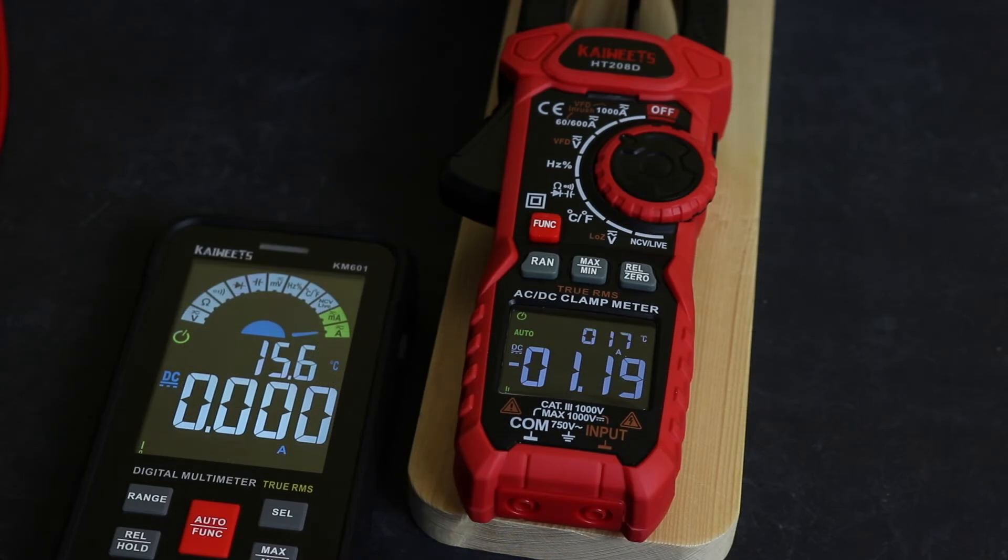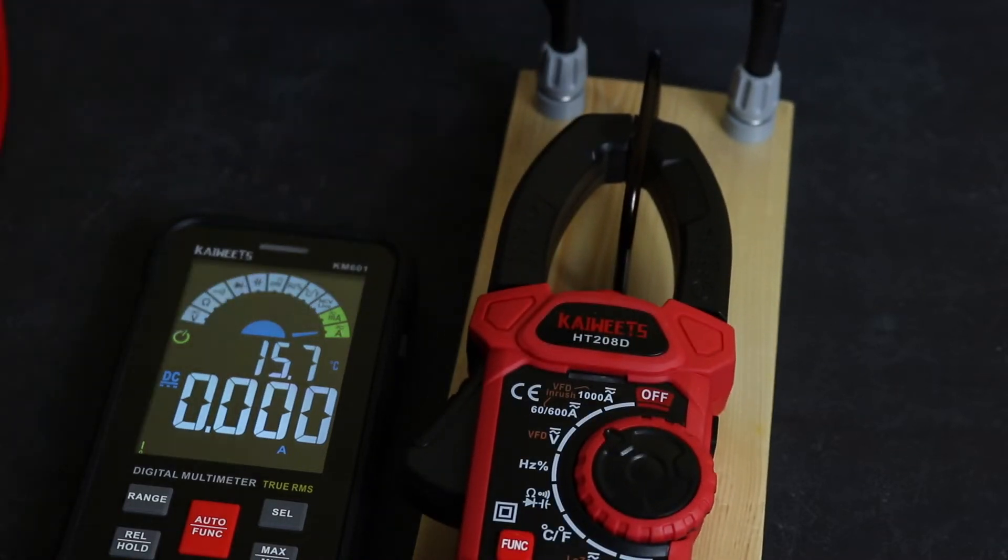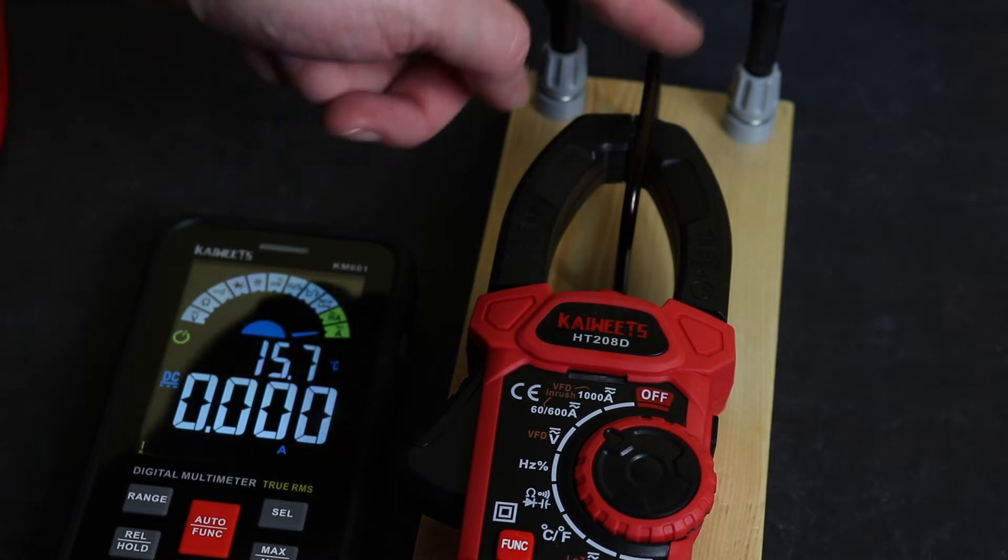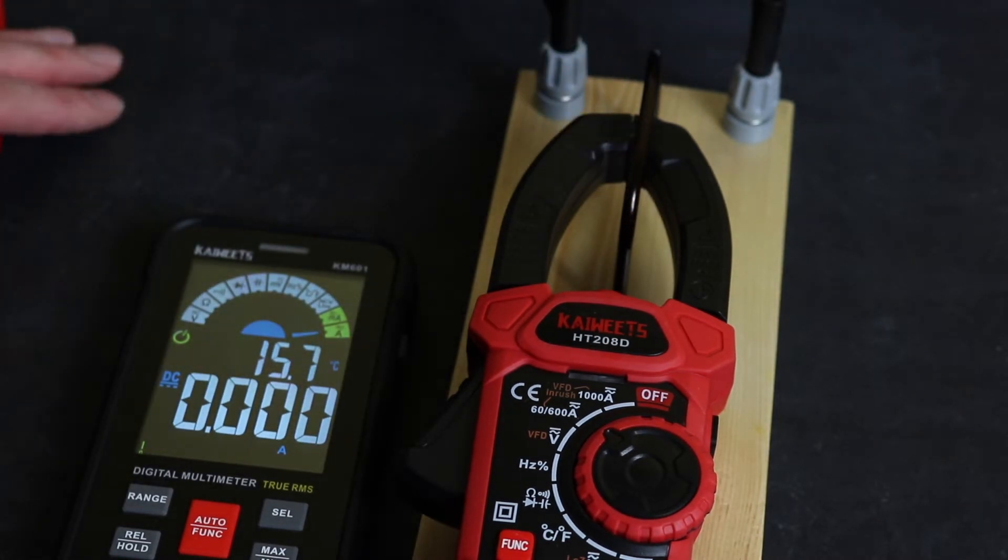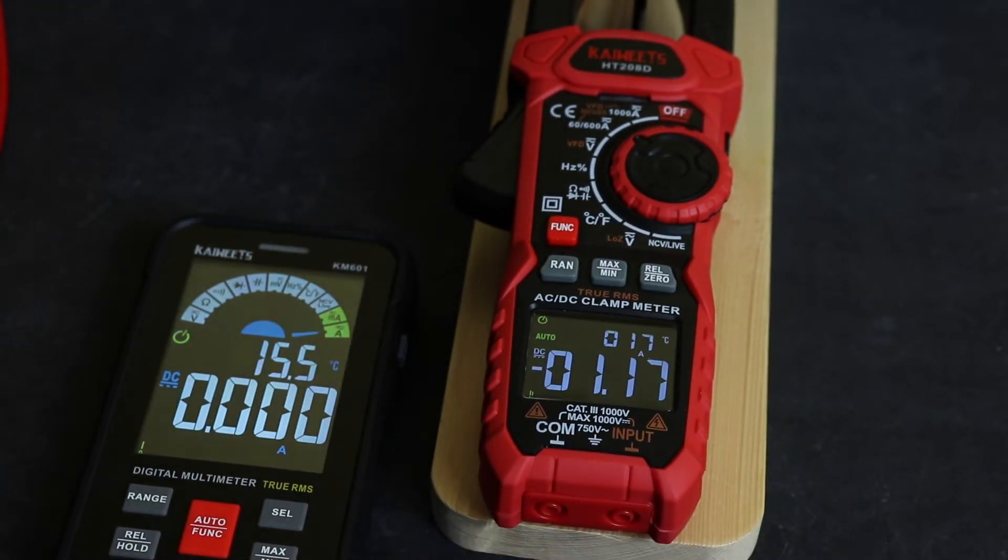The setup that I've got here, you can see the current clamp is sitting on a little table. I've got a single loop going through the actual clamp. This is plugged into my test set running at the back there, and I'm using the KM601 as a comparison for current measurements up to 10 amps.